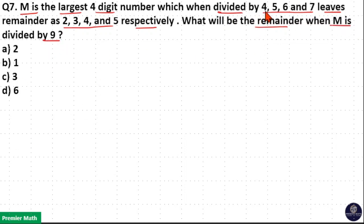Here take the LCM of 4, 5, 6 and 7. The LCM of divisors 4, 5, 6 and 7 is equal to 420. 4 can be written as 2 squared. Now 6 into 7 is 42, 42 into 5 into 10, so 42 into 10 is 420.